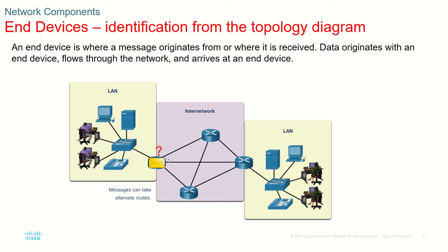Here you can see another device — this is a router. There are multiple routers shown here, and these are all different parts of the network. This represents the internet network. Messages can take different routes or alternate routes through this network.